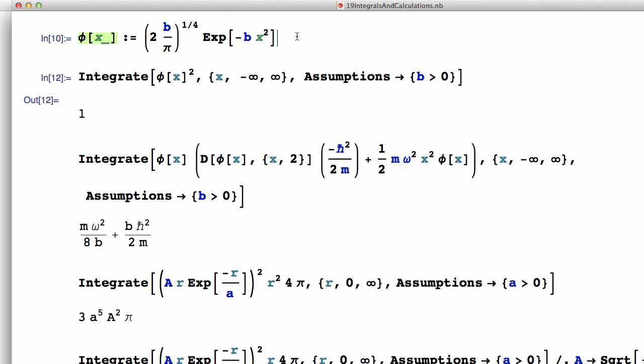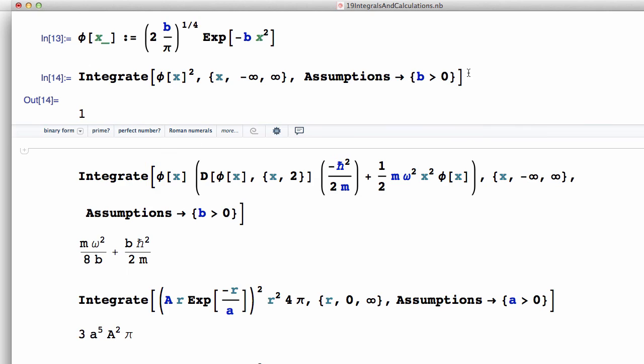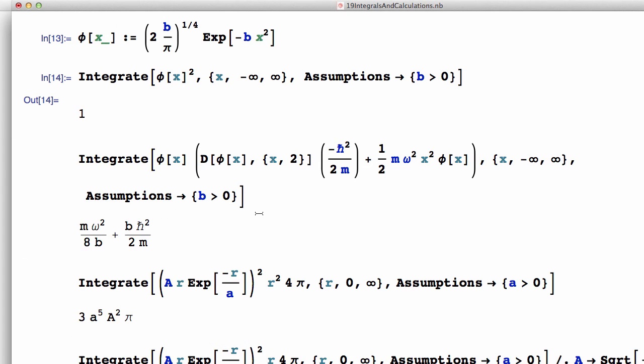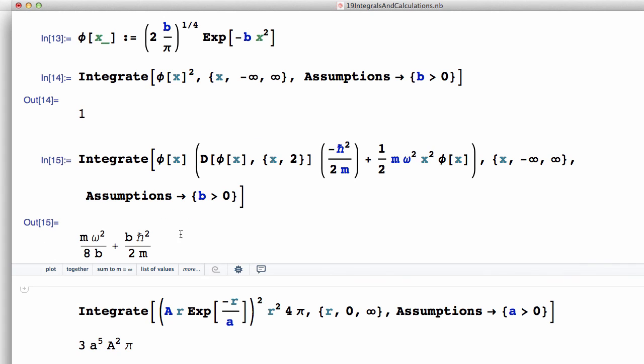So here's my wave function. I'll just run that. And just to show you that this is the right normalization constant - equals 1. And now coming down here, I've got my wave function, my derivative of my wave function, my second derivative of my wave function, and my potential term. And I'm integrating all of those.